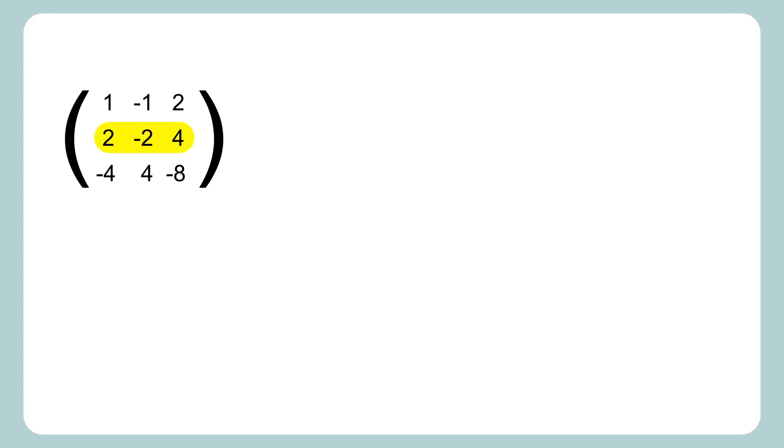Second row is twice the first, the third row is negative four times the first. You could also say the same thing about the columns, just constant multiples of each other, like the third column is twice the first.